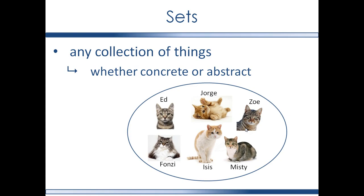So Ed, Jorge, Zoe, Fonzie, Isis, and Misty are the set of cats in the Gilbert home. Or another way of saying that is Ed, Misty, Isis, Fonzie, Jorge, and Zoe are elements of the set of cats in the Gilbert home.